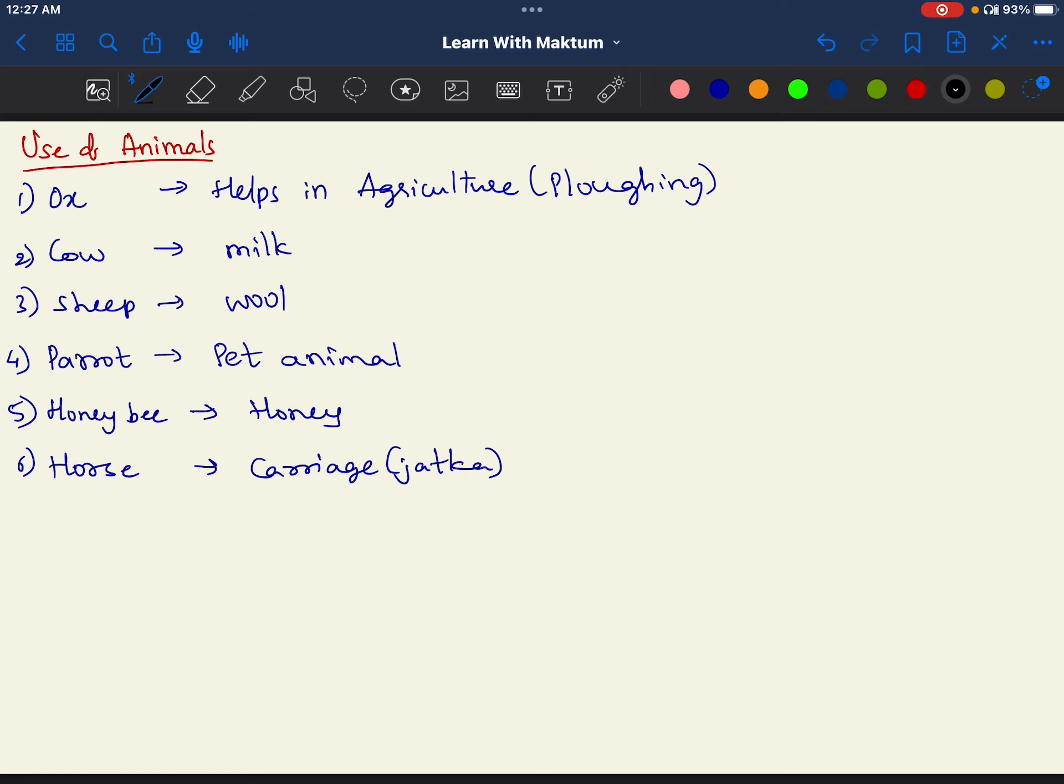Now, let's see the uses of animals. Ox helps in agriculture. Cow gives us milk. Sheep gives us wool. Parrot gives us entertainment. Honey bee gives us honey. Horse is used for carriages, for transport. So these are some of the uses of the animals.